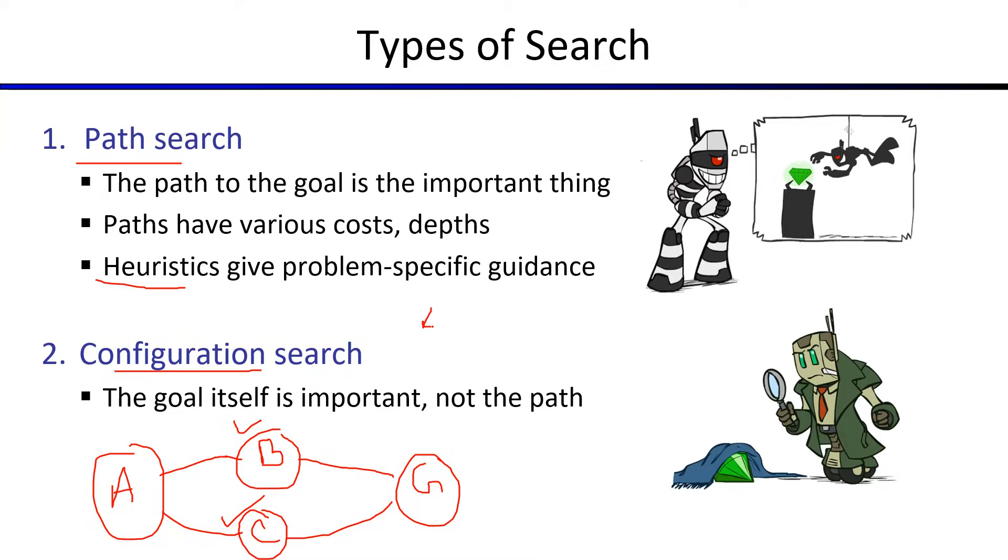Let's consider the four queens problem. Here, we are asked to place four queens in a chessboard in such a manner that none of these queens attack the others. So this is a configuration search problem.